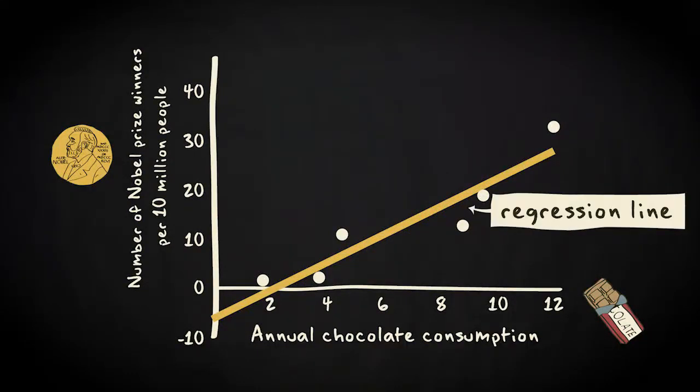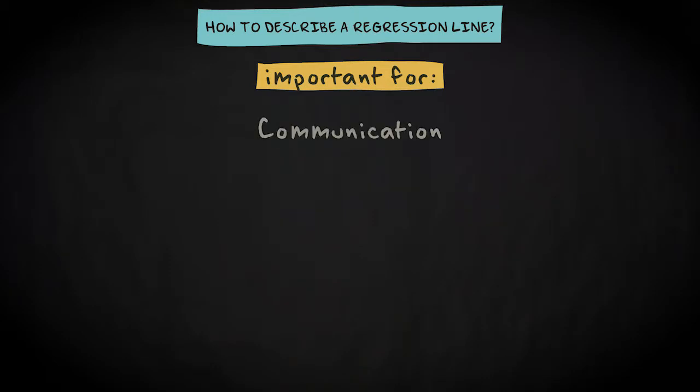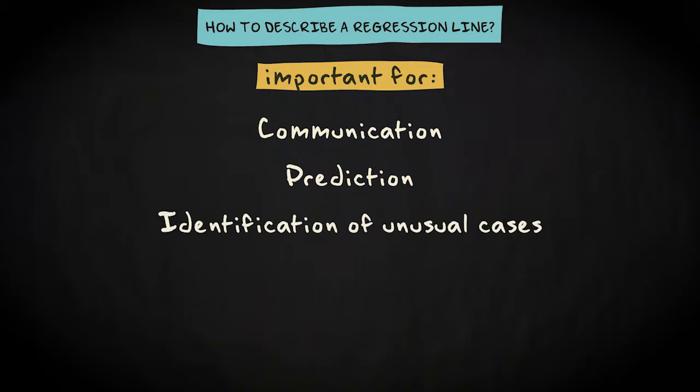The regression line is the straight line that describes the linear relationship between the two variables best. But how can we describe what this line looks like? This is a very important question, because by describing the line with a formula, we can easily communicate our regression analysis to other people, predict the number of Nobel Prize winners in other countries, and identify countries that do not fit the pattern.